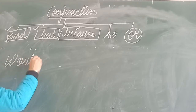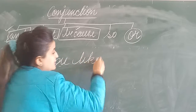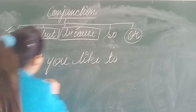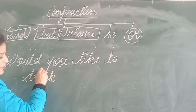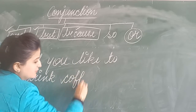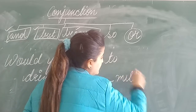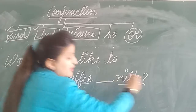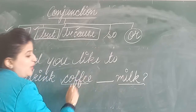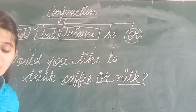Let's take the example: 'Would you like to drink coffee ___ milk?' Here I am having a choice — you want coffee or milk? So in between this choice, we will use the word 'or'.